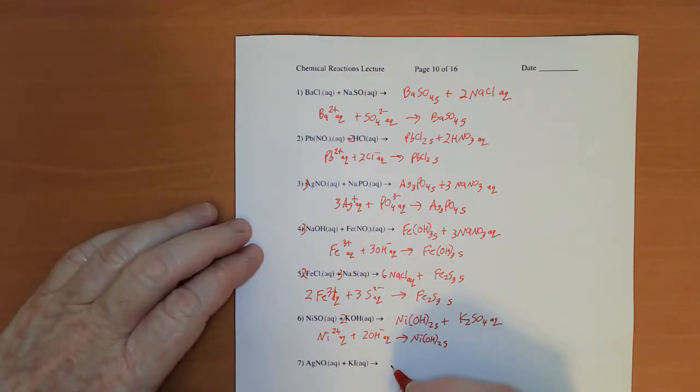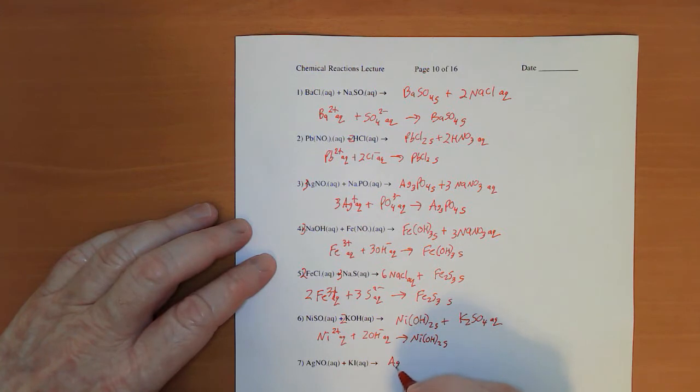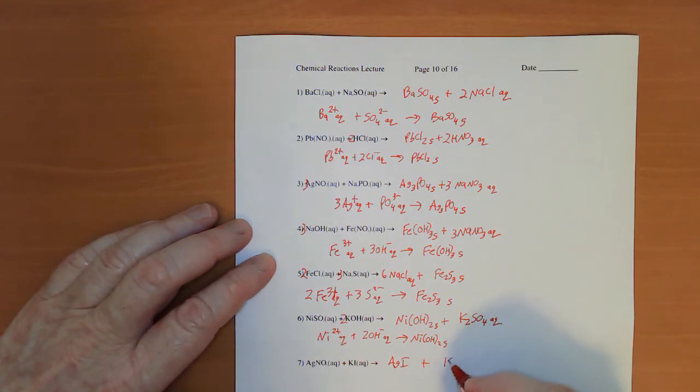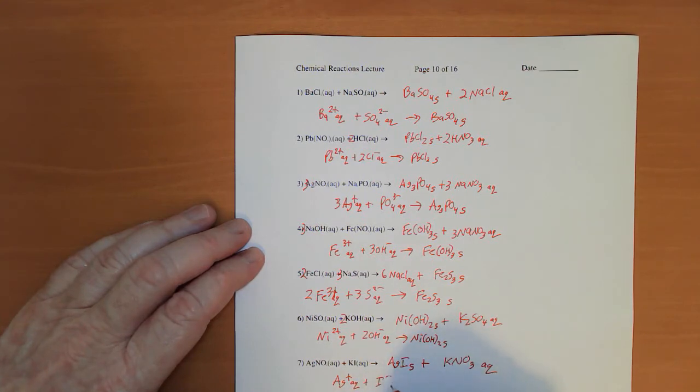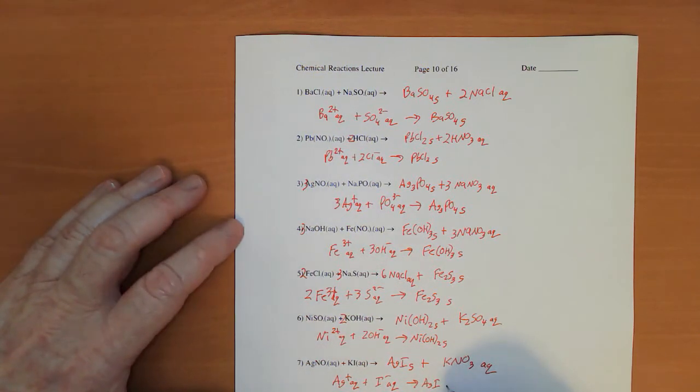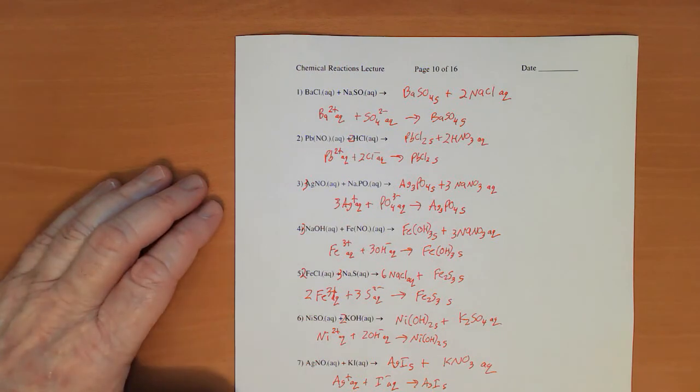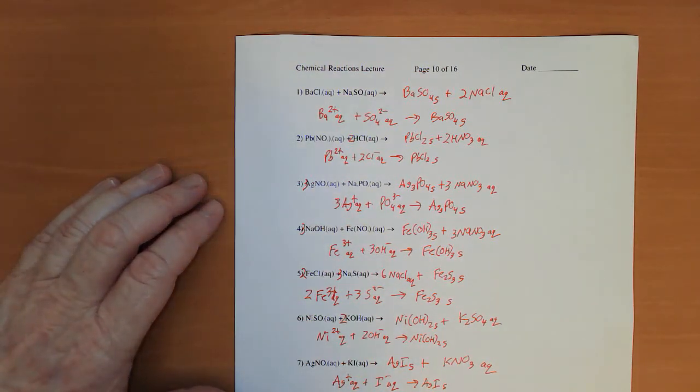In my next one I get AgI and KNO3. Immediately group one or nitrate, and silver, that's easy to spot, that's going to be the solid. So I have Ag+ aqueous plus I- aqueous to give me AgI, and that's going to be a solid.